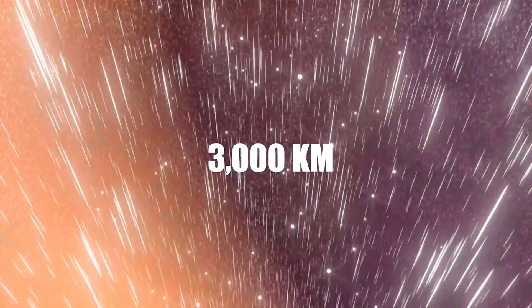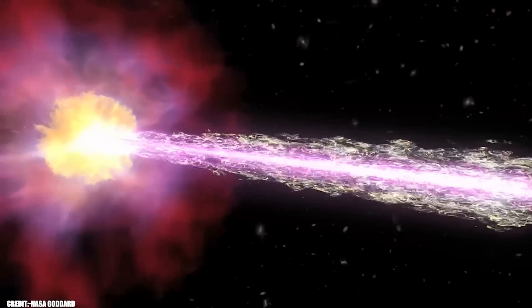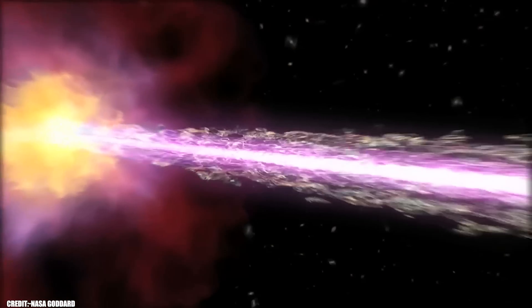Light always moves at about 300,000 km per second, regardless of who measures it, so time is forced to adjust instead.